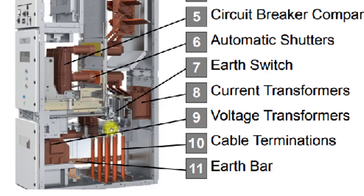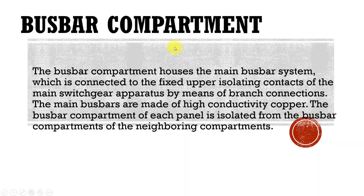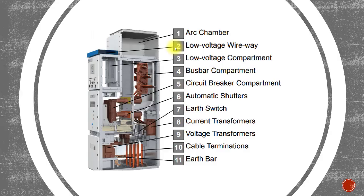Number ten is the cable termination, visible here in the cable compartment. Number eleven is the earthing bar, which is another arrangement within the compartment. I hope you now have a great idea of how MV switchgear looks. We can go on to study each compartment one by one. Thank you very much.